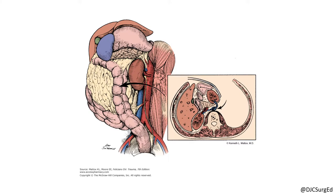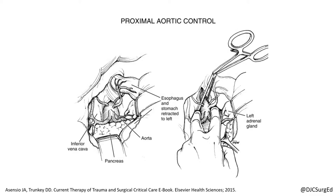If a patient is in extremis, the supraceliac aorta can be accessed by taking down the gastrohepatic ligament and retracting the stomach and esophagus to the left. The aorta can be controlled either by digital compression or with the use of an aortic root compressor or clamp.